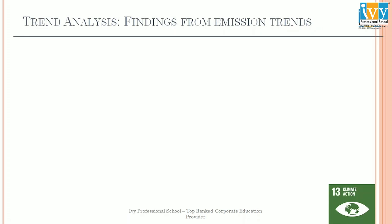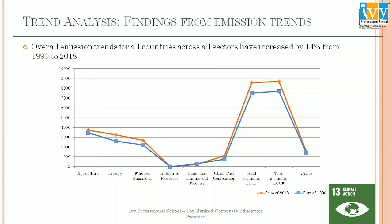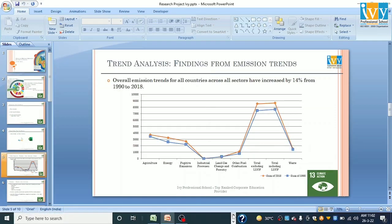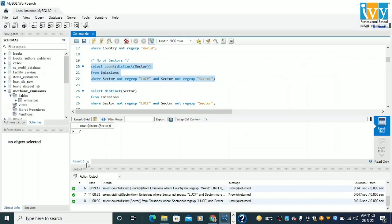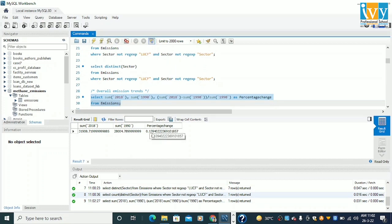Moving to trend analysis and findings from emission trends — overall emissions have increased by 14% from 1990 to 2018. In the chart, the orange line shows 2018 and the blue line shows 1991. From the SQL query for overall emission trends, we get 0.139, which is approximately 14% increase.